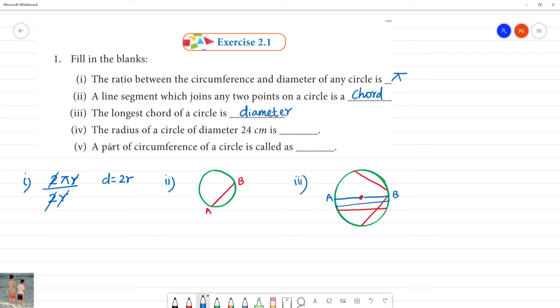The radius of the circle of diameter is 24 cm. The fourth one, radius of circle is diameter. The diameter is 24 cm, so the radius is equal to diameter by 2. That is, 24 by 2 is 12 cm.